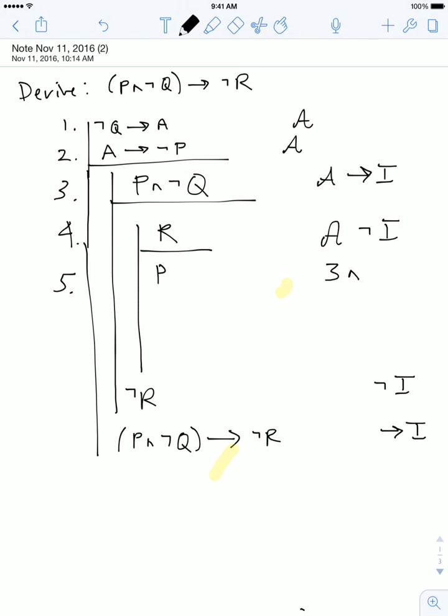right away as coming from line 3 by conjunction elimination. And now if I have not Q, which I can get from line 3 by conjunction elimination, I can use not Q and this sentence to get A. And once I have A, I can get not P. So let's back up just a bit and go nice and slow.